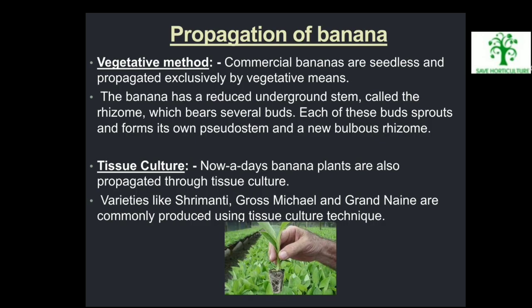Propagation of Banana — Vegetative method: Commercially, bananas are seedless and propagated by vegetative means. The banana has a reduced underground stem called the rhizome which bears several buds. Each of these buds sprouts and forms its own pseudostem and a new bulbous rhizome. Tissue culture: Nowadays, banana plants are also propagated through tissue culture. Varieties like Srimanti, Grossmichael and Grandnene are commonly produced using tissue culture technique.